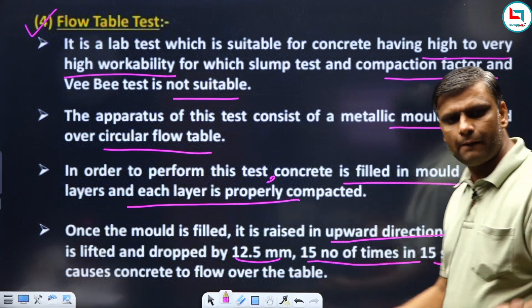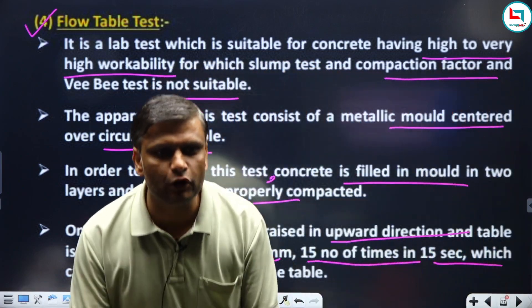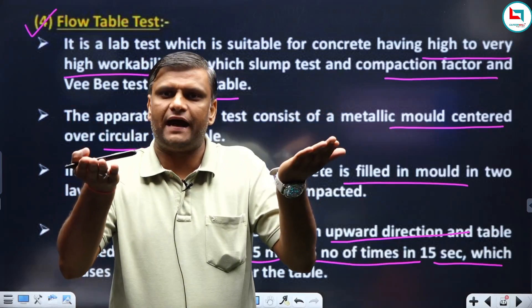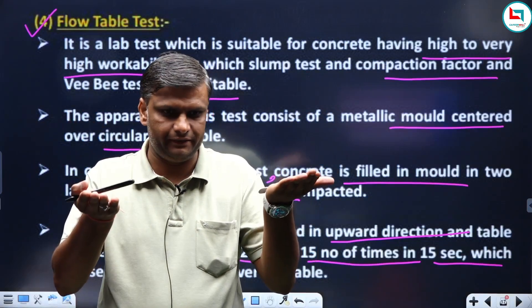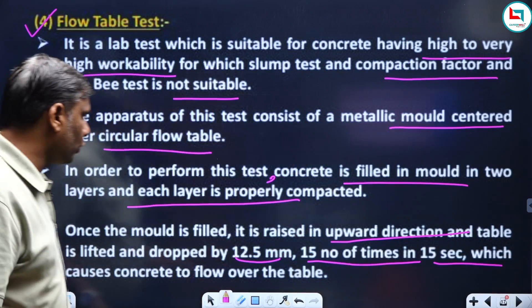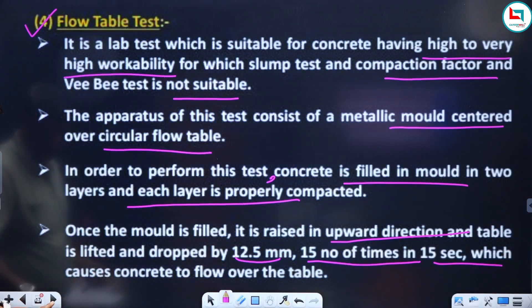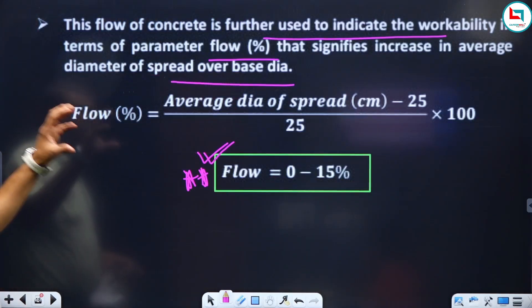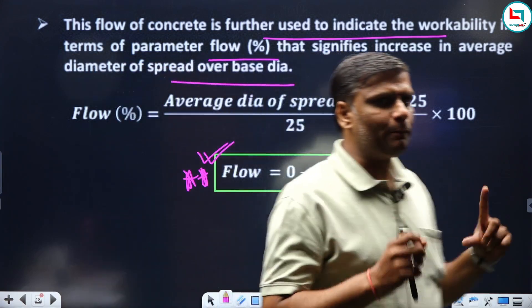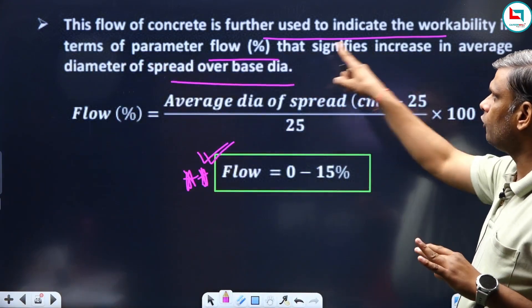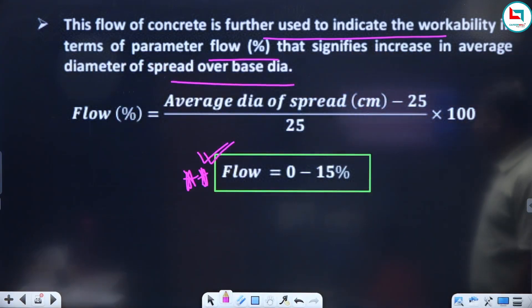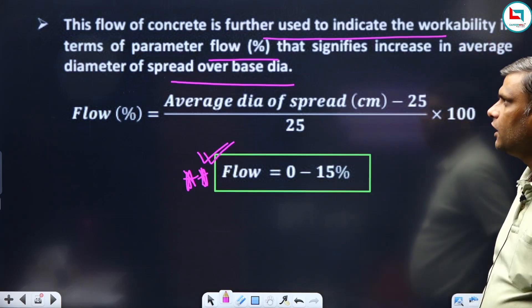As you add the concrete, the table will be lifted 12.5 mm for 15 seconds, 15 number of blows, 15 number of times for 15 seconds. And according to that, flow of the concrete is further used to calculate the flow percentage.